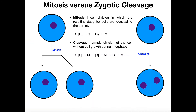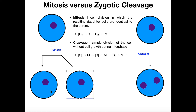Mitosis versus zygotic cleavage — what's the difference? In mitosis, a parent cell divides into two identical daughter cells. Each daughter cell appears identical to the parent — that's a characteristic of mitosis. Generally speaking, the daughter cells ought to be identical clones. They have the same DNA and they're going to be the same size as the original parent cell.